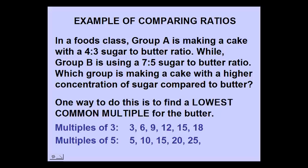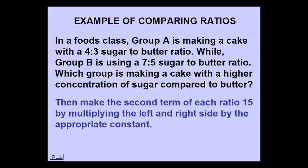So we'd take the 3 and the 5 and find multiples. What is the lowest common multiple for 3 and 5? 15. So now we will take that lowest common multiple and decide what we need to multiply the left and right side of the ratio by to come up with this value.